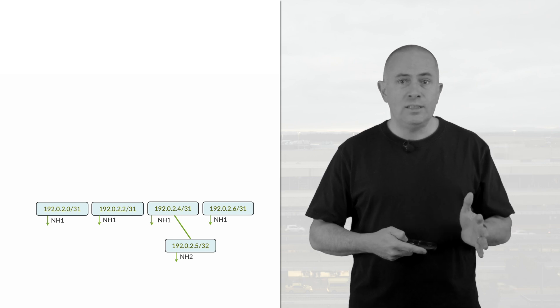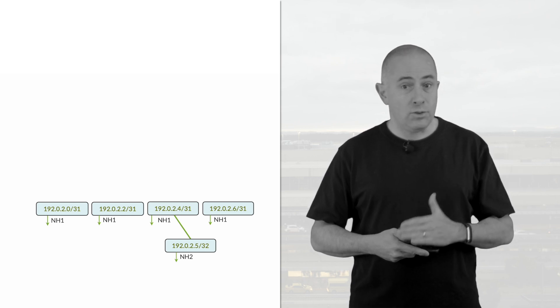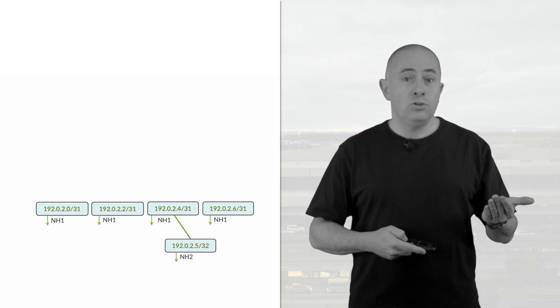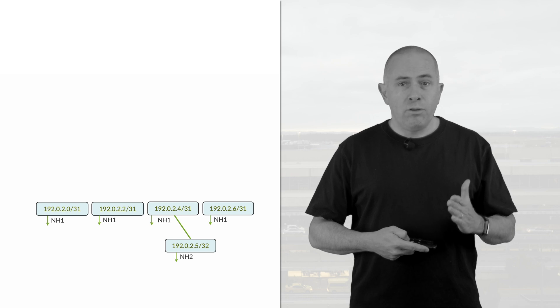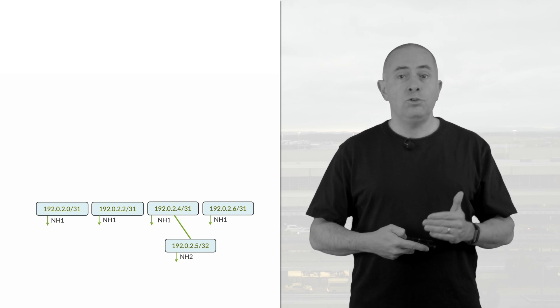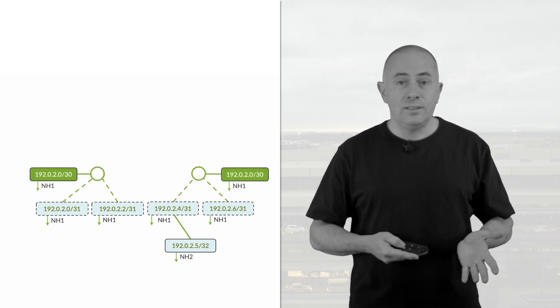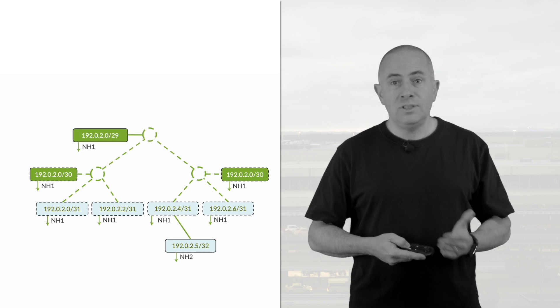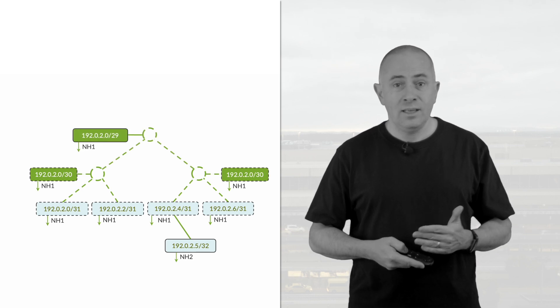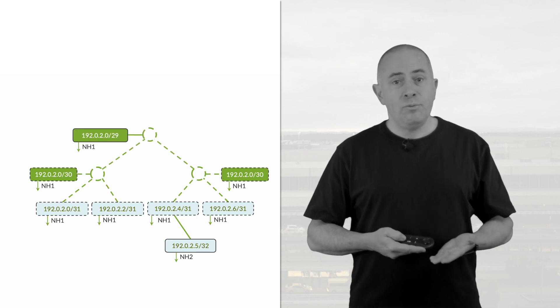Another interesting subtlety: having a more specific route pointing to a different next-hop doesn't prevent the algorithm from creating the aggregate. In this example, I have five routes — 192.0.2.5/32 points to NH2, while all other /31s point to NH1. We can still create the aggregate 192.0.2.0/29 and end up with just these two prefixes installed in hardware.